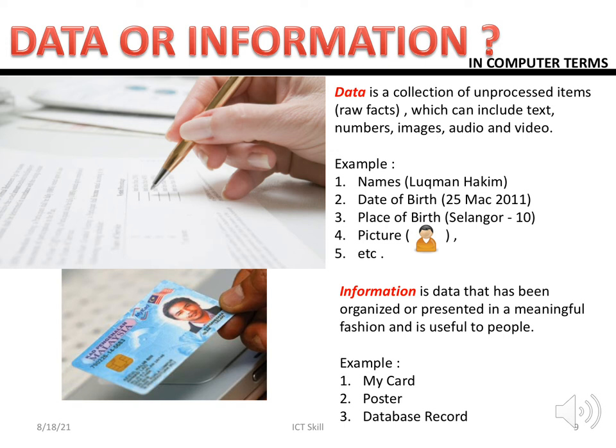Another example of information is a receipt. When you buy something from a shop and receive a receipt, you can see the price, items, number of items, date, and cashier's name. That collection of data on the receipt is what we call information.